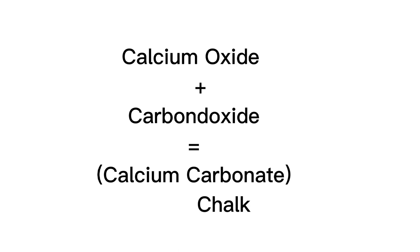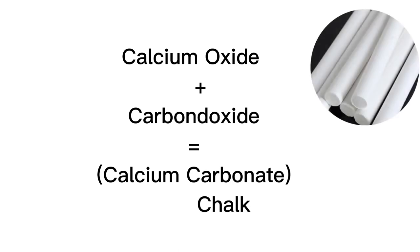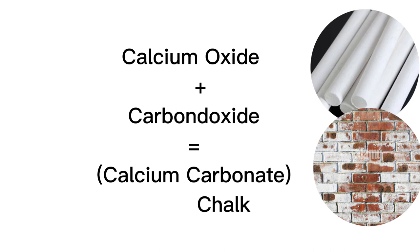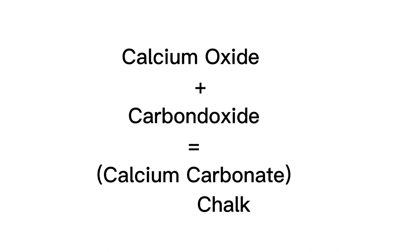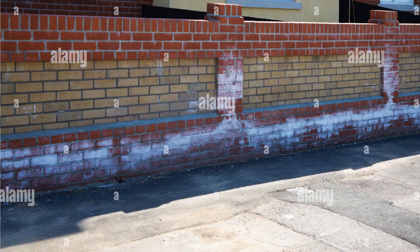When calcium hydroxide reacts with carbon dioxide, they form what is called calcium carbonate. The other name for calcium carbonate is chalk — the same chalk we used on blackboards in primary school. That is why you can see a very good resemblance between the two. This whole process — where calcium hydroxide reacts with carbon dioxide in the air to form calcium carbonate on the brick surface — is what is called efflorescence.